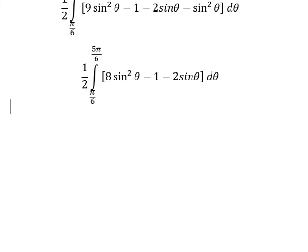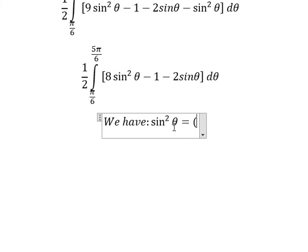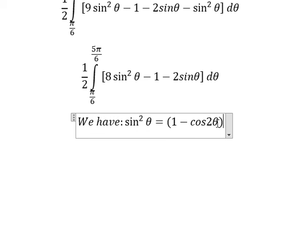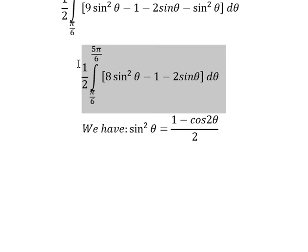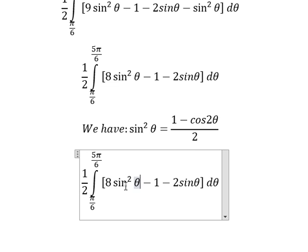we have the formula in here. That's sine squared theta equals 1 minus cosine 2 theta over 2. So we put this one to replace this one.